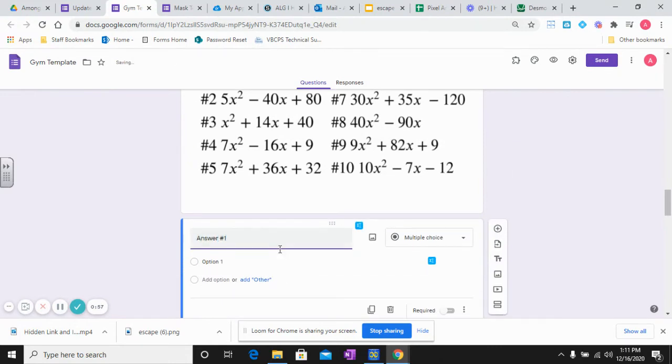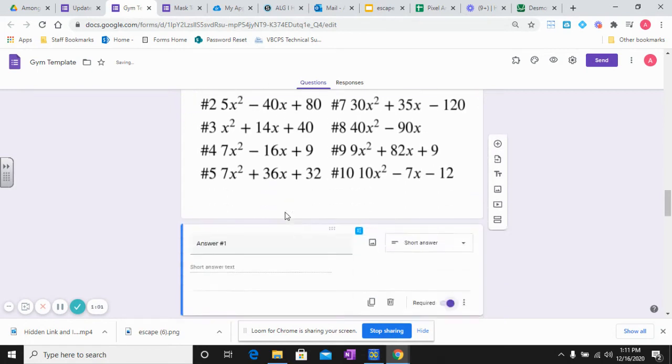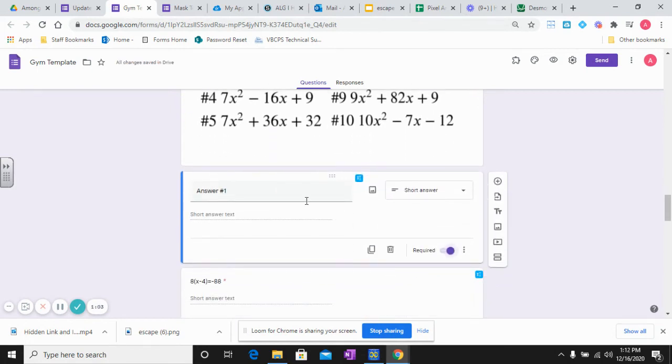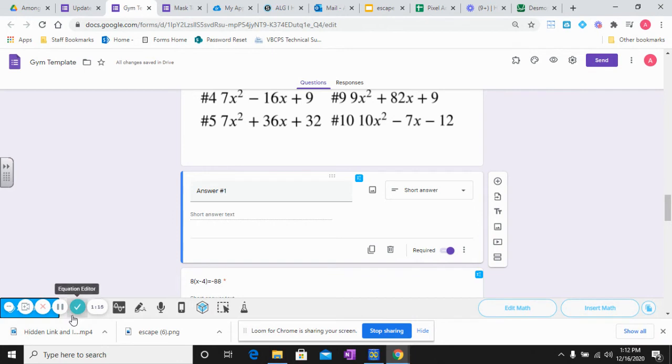My other option for making this escape room is that I can use EquatIO directly. When you add it on your Google up here, you can just open and close it. I can type right on it by clicking on the E, it brings it up at the bottom of my screen, and then it lets me type my information.